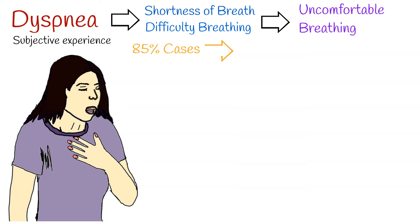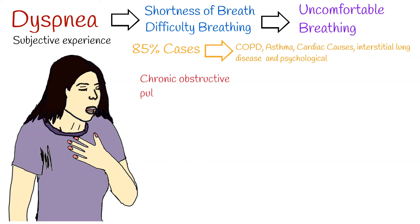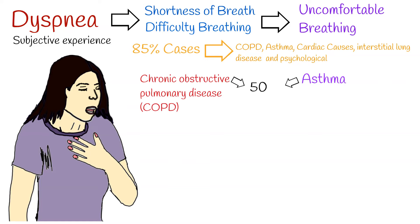Almost 85% of cases are chronic obstructive pulmonary disease, cardiac failure, asthma, ischemic heart disease, interstitial lung disease, and psychological conditions. Almost half of dyspnea cases are caused by chronic obstructive pulmonary disease or asthma.